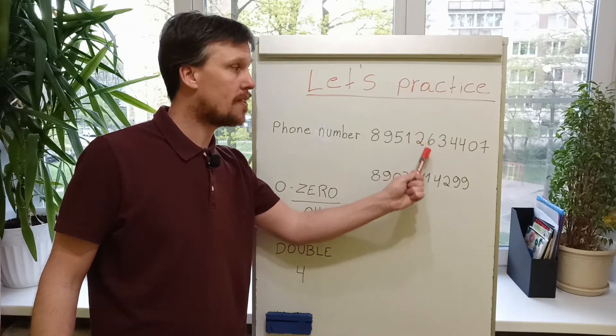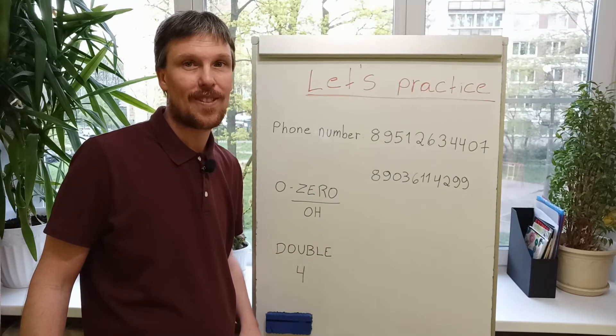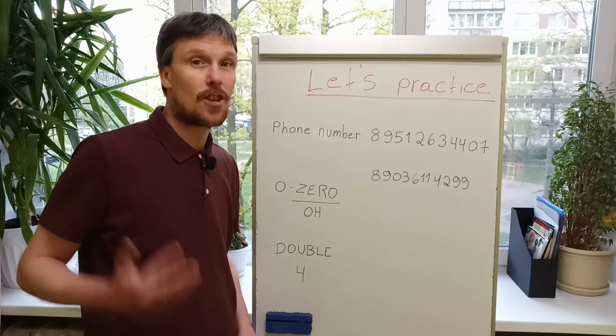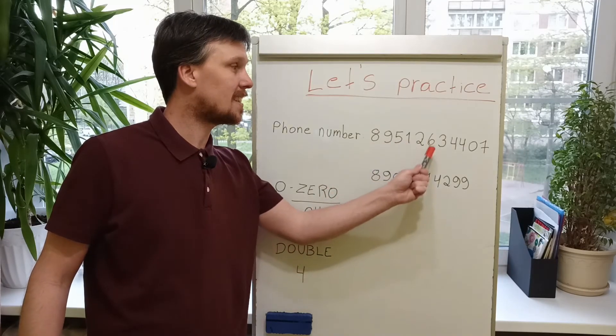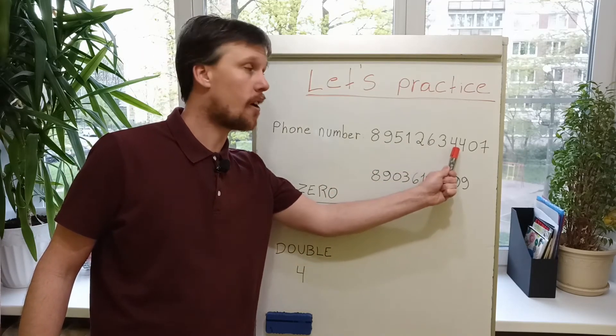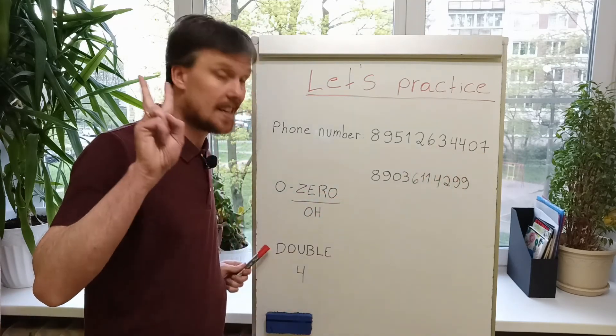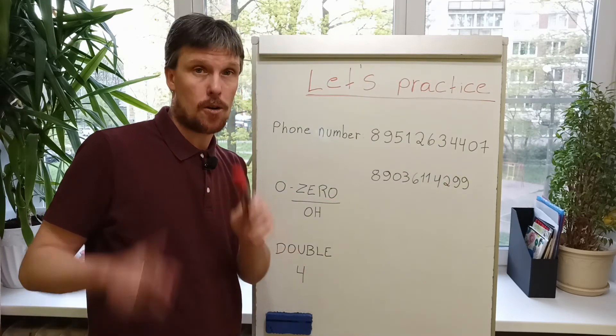For example, Nine. Five. One. Two. Six. Three. Double four. O. Seven. Four. Four. Or double four. Okay? So, repeat.